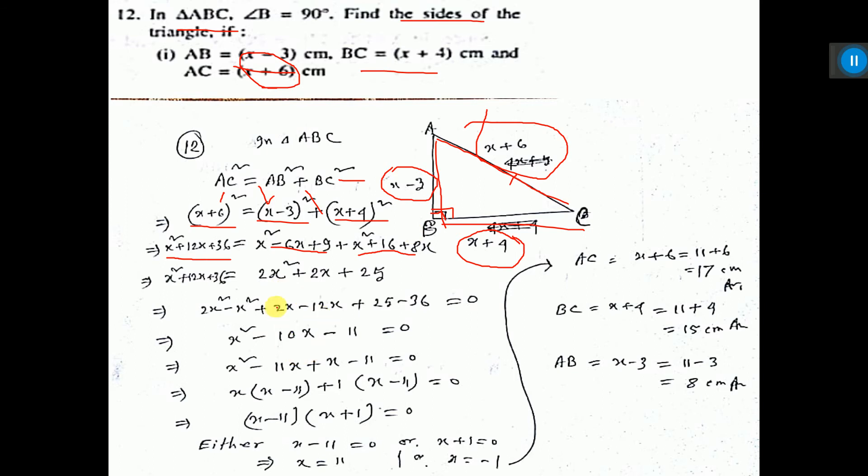Now find the value of x here. You see x is coming as 11 and minus 1. But x cannot be negative, because if you put x negative here, minus 1 minus 3, it will come as a negative side. So it cannot be. That is why x equal to 11 you have to take.